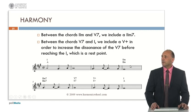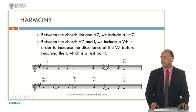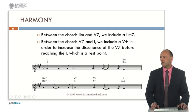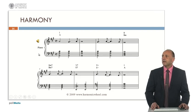Here, between the second minor and five dominant seventh, we included a second degree minor seventh. And between the dominant seventh and tonic, we included a fifth degree augmented, in order to increase the dissonance of the dominant seventh before reaching the first degree, which is a rest point. Let's listen to this harmonization.